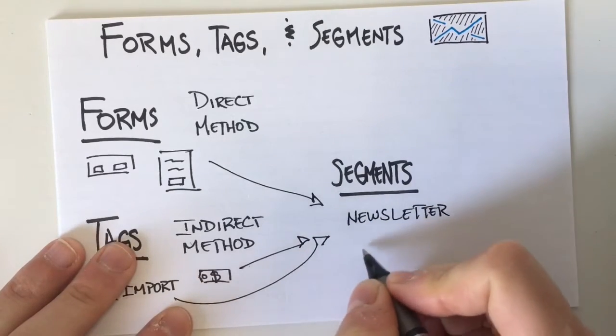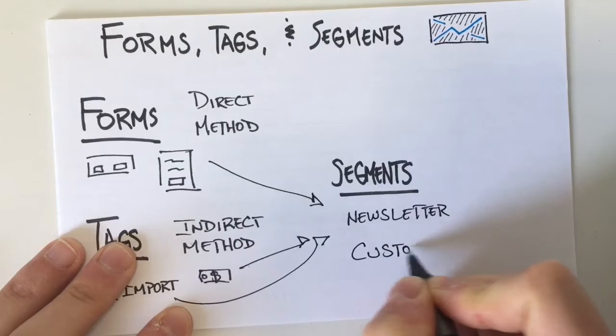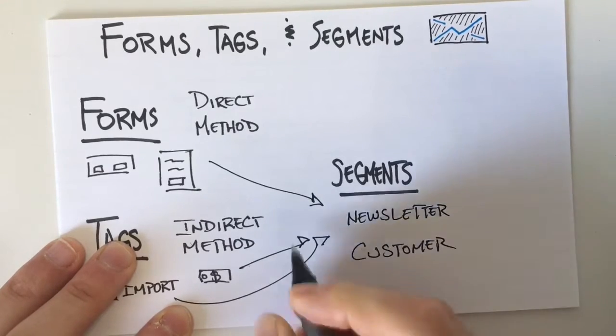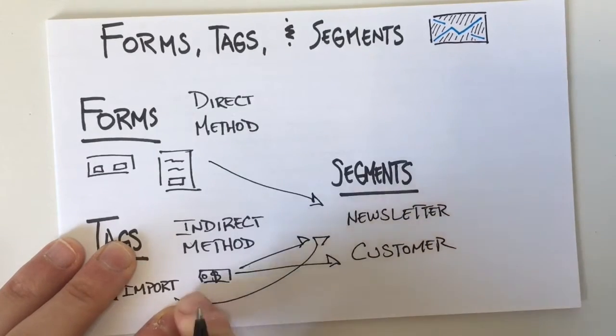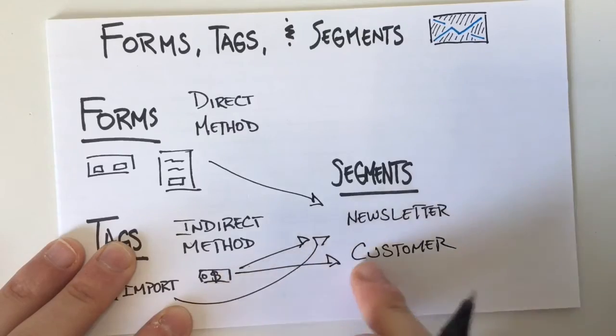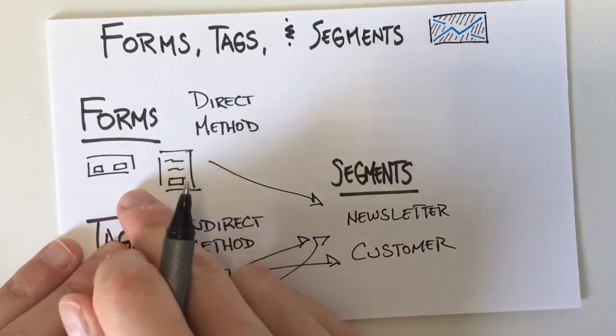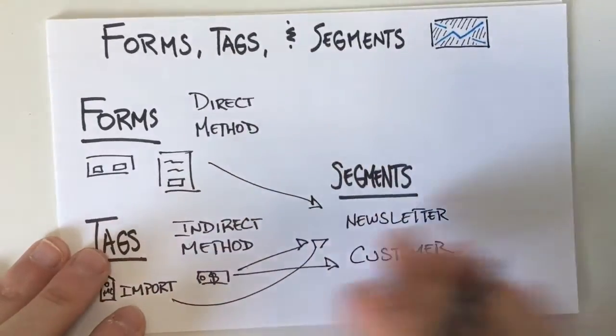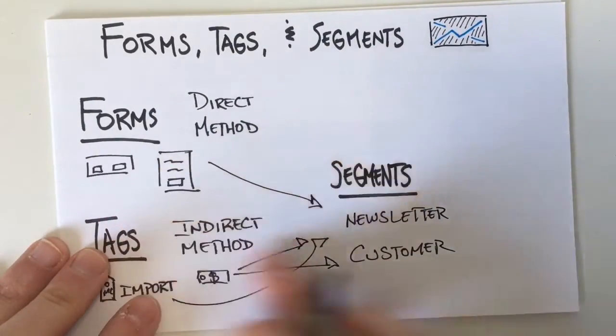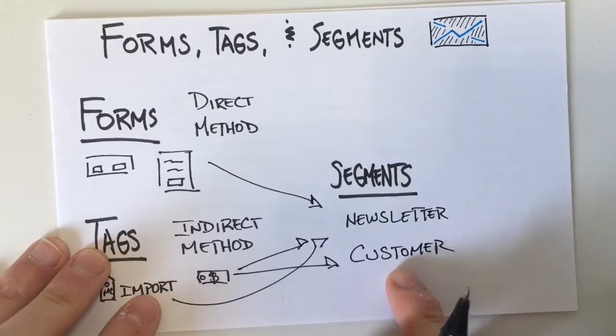The other thing that you could do is have a customer segment. And then anyone who had purchased with this tag, they could also go to customer. There are some integrations that use forms to connect. So if you did happen to have a purchase form, they would go into this segment as well.